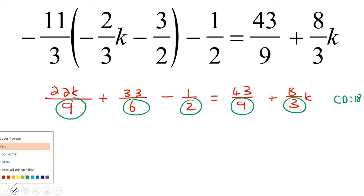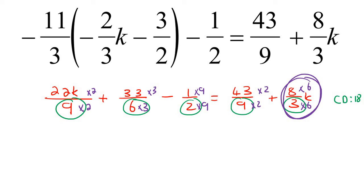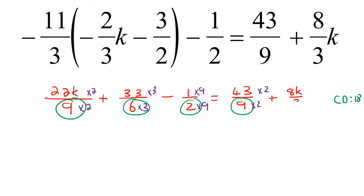So we'll multiply this one by 2 and the top by 2, this one by 3 and the top by 3, this one by 9 and the top by 9, this one by 2, this one by 6 and this one by 6. We could have rewritten this in a better, more comfortable way. We've said we're multiplying this one by 6 and this one by 6. Now 22 times 2 is 44, so we can say 44k. Remember, I don't have to write the denominator since they're all the same.